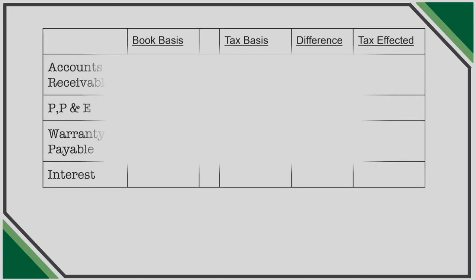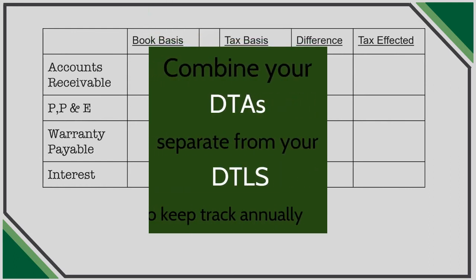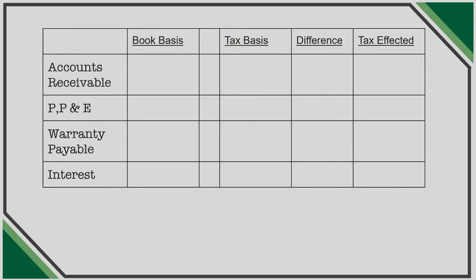Although our example illustrates only one asset account, setting up a table of all assets and liabilities with book-tax differences will simplify both recording annual changes, as well as validate the amount of DTAs and DTLs recorded as appropriate. Setting up your analysis in one year may prove daunting, but can be ideal for tracking which balance sheet items generate deferred tax assets and ensuring that you eventually recognize those assets.